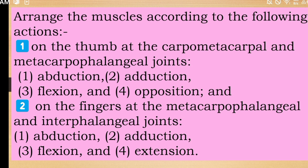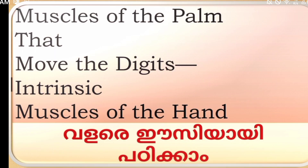At the metacarpophalangeal joints, actions on the fingers include abduction, adduction, flexion, and opposition. Following action on the fingers at the metacarpophalangeal and interphalangeal joints: abduction, adduction, flexion, and extension. The same muscles may be mentioned more than once. In this class, the muscles of the palm that move the digits are the intrinsic muscles of the hand. Thank you.